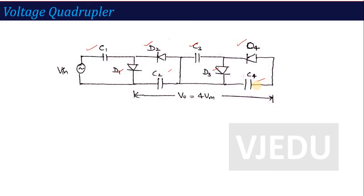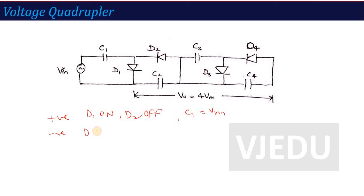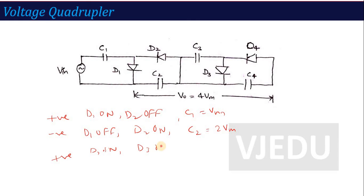The working of the Quadrupler: during the positive half cycle, D1 is on, D2 is off, and C1 charges to VM. During the negative half cycle, D1 is off, D2 is on — and C1's VM combined with the input VM charges C2 to 2VM. During the second positive half cycle, D1 and D3 are on; C2's charge transfers and C3 charges to 2VM. During the second negative half cycle, D1 is off, D2 is on, D3 is off, D4 is on.